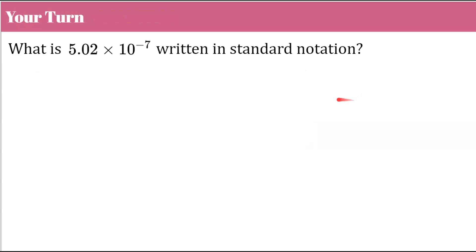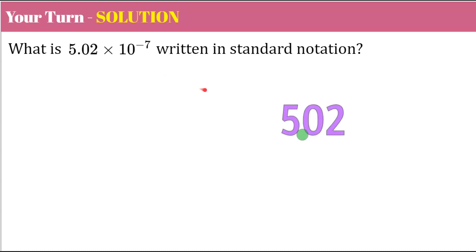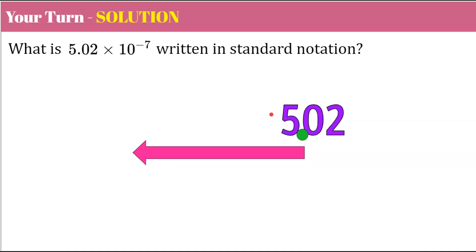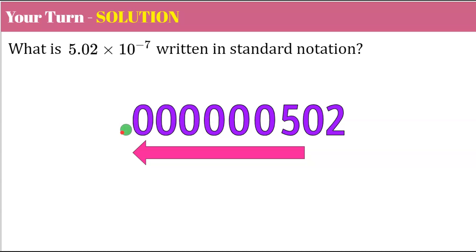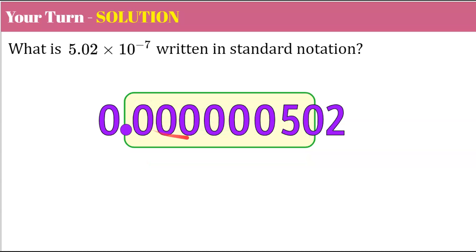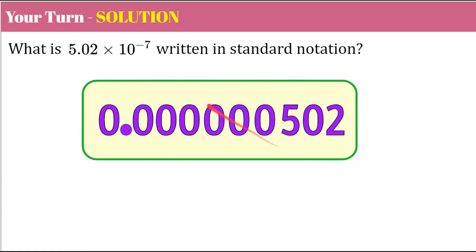Let's try another one. Pause here and write this scientific number in standard notation. Welcome back — let's go over the solution. I'm going to start by writing my factor 5.02 and move that decimal point seven spaces to the left, because a negative exponent represents a number less than one. The 5 is one of these seven places. Moving: 1, 2, 3, 4, 5, 6, 7 — add your decimal point and a leading zero. So this number in standard notation is equivalent to this scientific notation value.